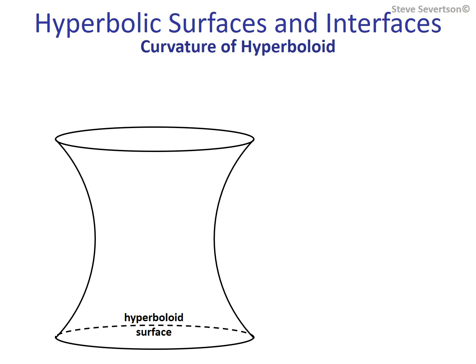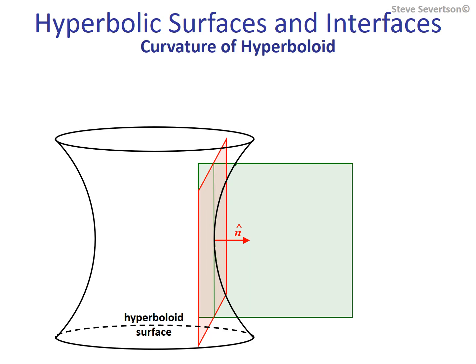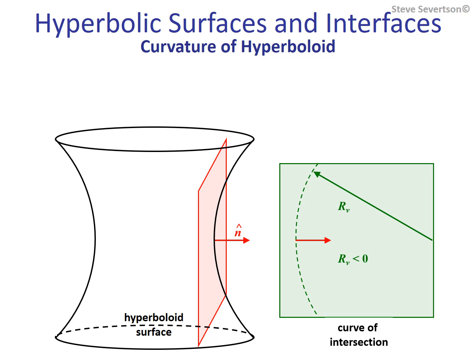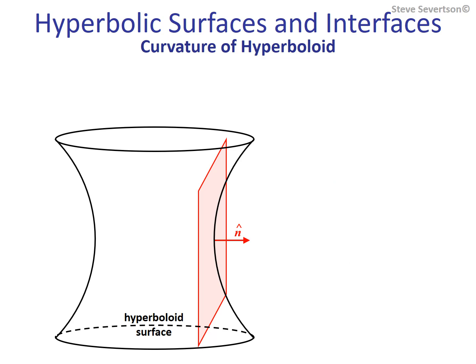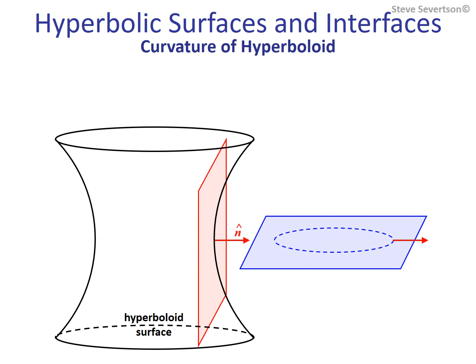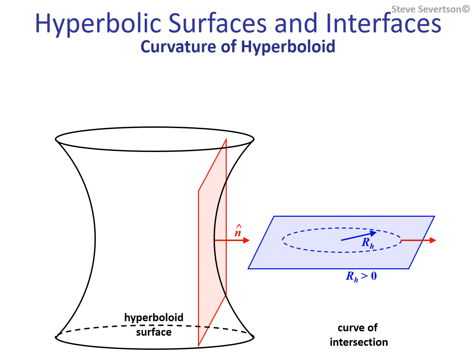The final basic geometric shape considered here is the hyperboloid, which will be used to model capillary bridges that form between parallel surfaces. The point of interest is its narrowest region halfway down the structure. The same procedure is used to determine the principal curvature values. A vertical plane passed through the normal parallel to the symmetry axis produces a curve of intersection where the circle tangent to the surface is outside the shape—meaning the radius of curvature for the vertical plane is negative. The horizontal plane, rotated 90 degrees, produces a circular curve of intersection with a positive radius. Thus, for the hyperboloid there is one positive curvature value and one negative value.